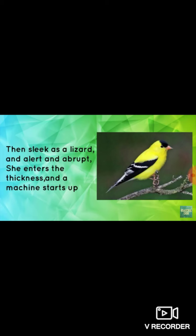I have already explained why the goldfinch, the way she enters into the thickness of the tree, is described as the movement of a lizard. In the last line, 'and a machine starts up.' Goldfinch is the engine of the family. The image of machine here refers to the young ones of the bird. A machine makes a lot of noise when it starts. Similarly, when the young birds see their mother, they start chirping like a machine, fluttering their wings fast in joy as their mother has come with food.